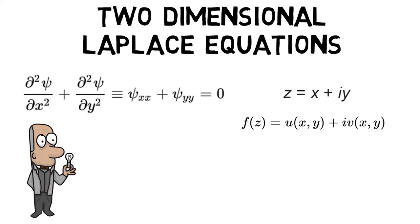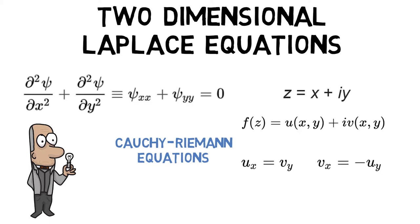then the necessary condition that f(z) be analytic is that the Cauchy-Riemann equations be satisfied. That is, u_x = v_y and v_x = -u_y, where u_x is the first partial derivative of u with respect to x.